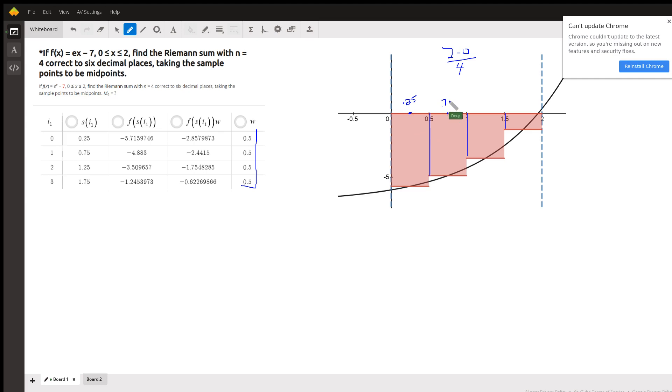And I can put these others in here: 0.75, 1.25, and right here, 1.75. And we plug those values into the original function to get the height of each rectangle. And that's what these numbers are right here.